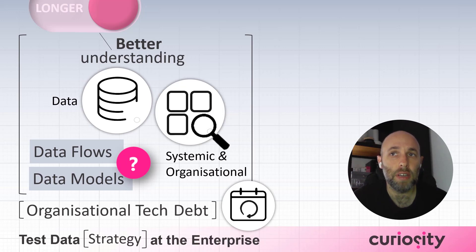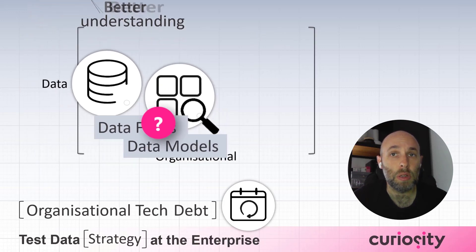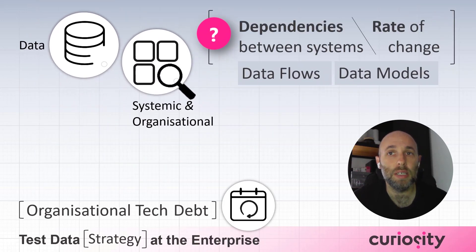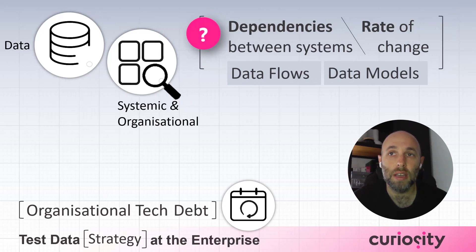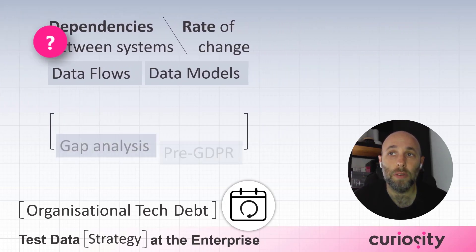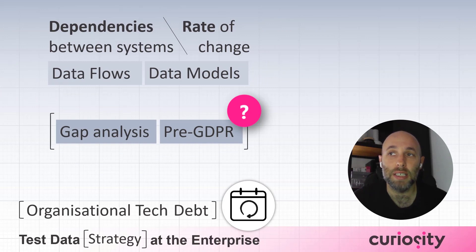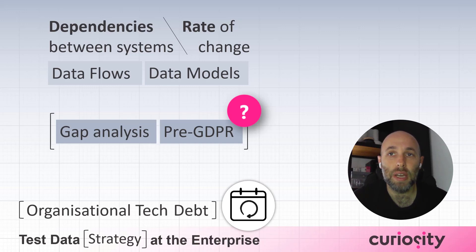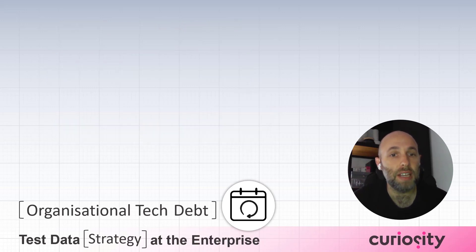As you listen to this video, you are probably in the same situation to some degree in your organisation. There are many reasons this will be the case: the dependencies between systems, the rate of change means that you don't have time to keep these data models up to date, or your systems are implemented before GDPR and no gap analysis has ever taken place, let alone steps to close the gap. Could test data delays be an example of interest an organisation is paying because of that debt?